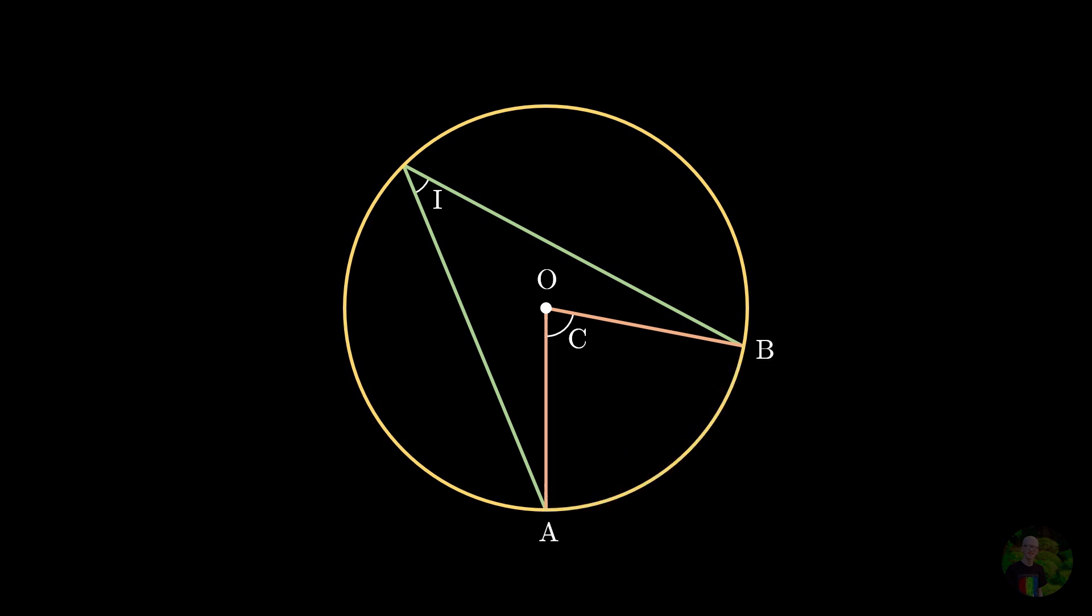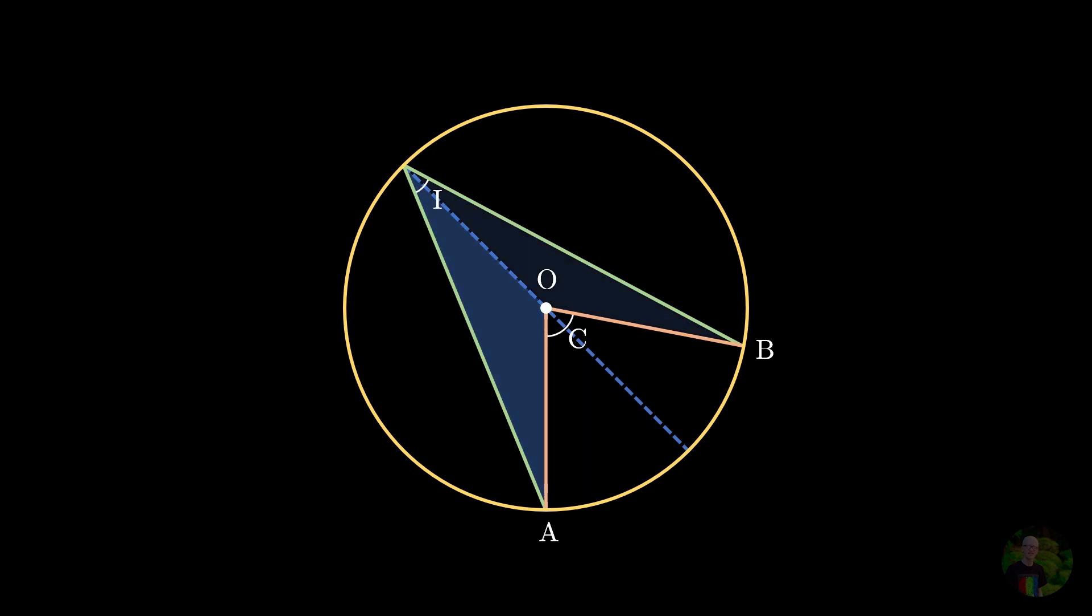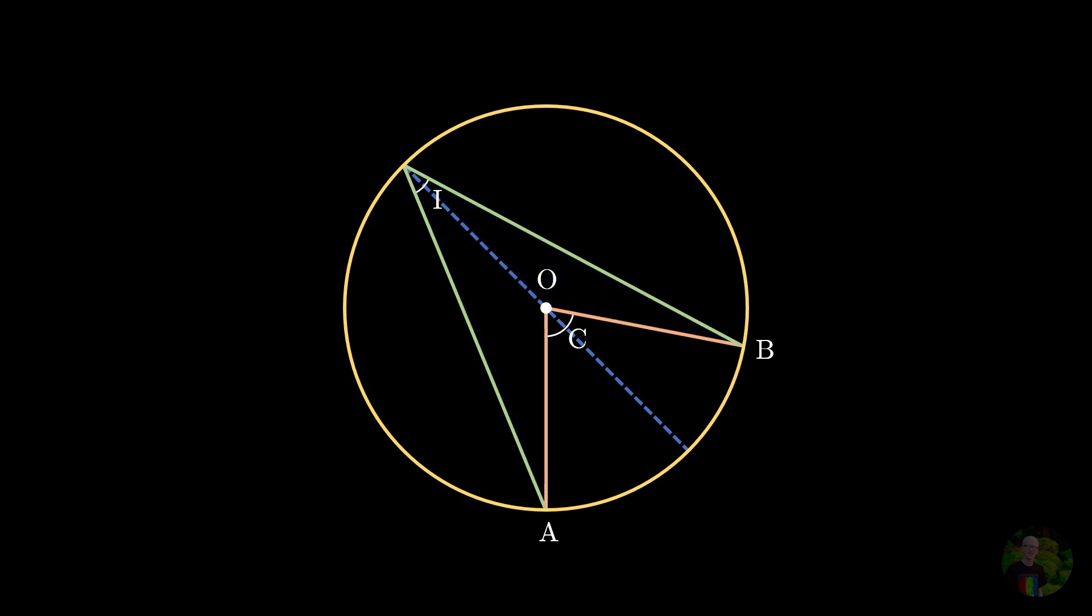We will then draw a dashed line from the vertex of the inscribed angle passing through the center, so that we will get two different isosceles triangles whose equal sides are the radii of the circle. We will let the base angles of those two isosceles triangles be alphas and betas respectively. And also, let's suppose that the dashed line we just drew divides the central angle into gamma 1 and gamma 2.